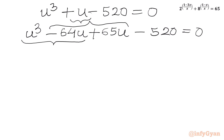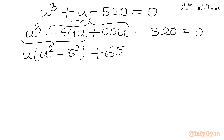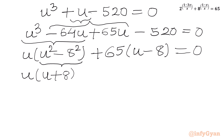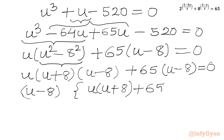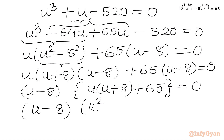Taking u common from the first two terms gives u times (u squared minus 64), which we can write as u squared minus 8 squared. Then taking 65 common from the remaining terms gives 65 times (u minus 8) equal to 0. Applying the difference of two squares formula: u times (u plus 8)(u minus 8) plus 65 times (u minus 8) equal to 0. Factoring out (u minus 8) gives: (u minus 8) times (u squared plus 8u plus 65) equal to 0.